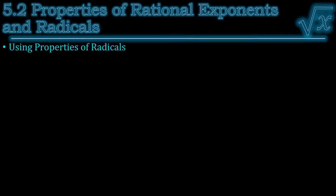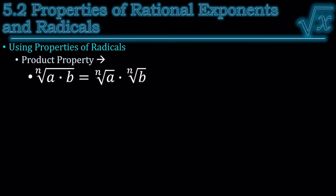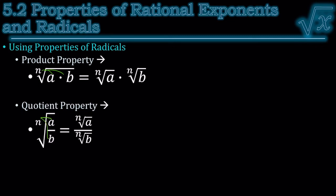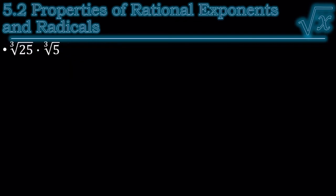But what if the problems are written as radicals instead of exponents? The same properties apply. When you multiply, you can distribute the radical. And when you divide, you can distribute the radical. Here we have the same index, and I can't do the cube root of 25 or the cube root of 5 because neither are perfect cubes. But since they're multiplying, what if I multiply those together? You get the cube root of 125. The cube root of 125 is 5.